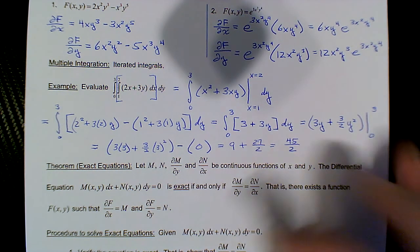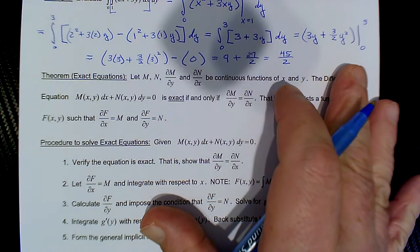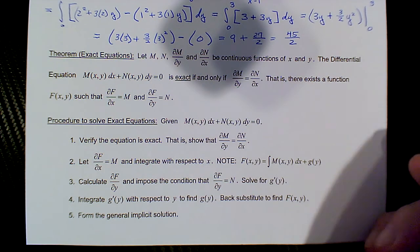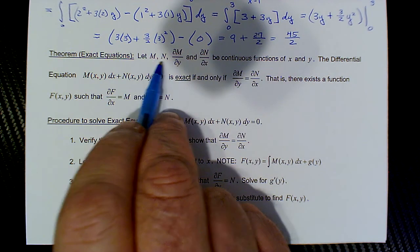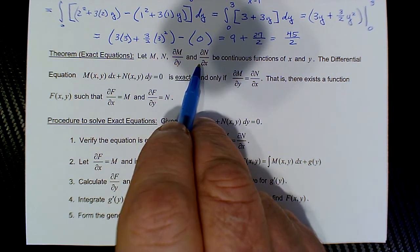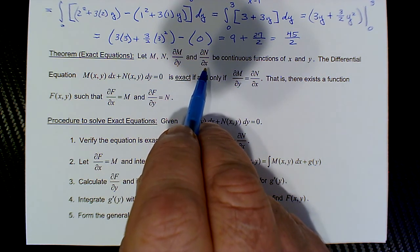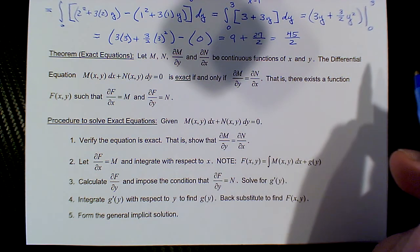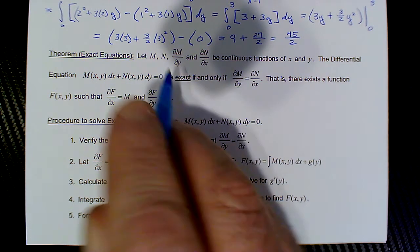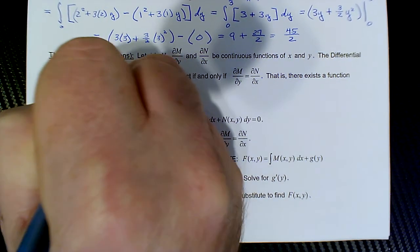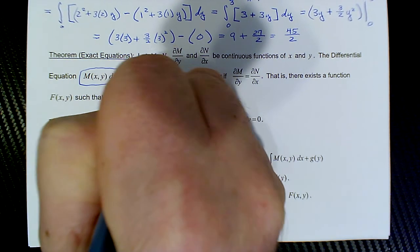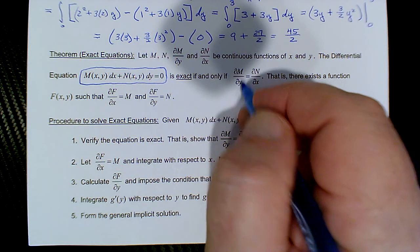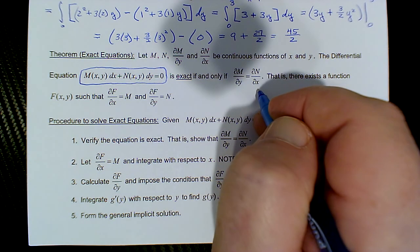Okay, so we need to be able to handle those concepts. Now here's the theorem regarding exact equations. We have preconditions: uppercase M, N, the partial of M with respect to y, and the partial of N with respect to x all have to be continuous functions of x and y — pretty much assume that's true. Here's the standard form for an exact equation, and we say it's exact if the partial of M with respect to y equals the partial of N with respect to x. So we first have to verify that it is an exact equation.